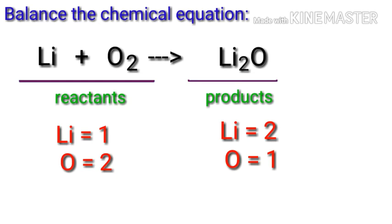In this equation we need to balance the oxygen atoms first. To do this we need to put a coefficient of two in front of Li2O. The oxygen atoms are balanced.